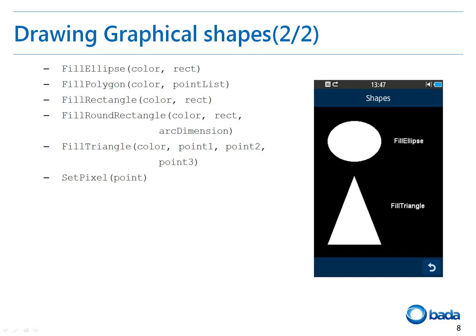Similar to drawing a shape, Bada provides a method to fill these shapes with a specific color. Bada provides a set of predefined colors and options to create user-defined colors, which we'll look at later in this tutorial. A filling function is supported for the ellipse, polygon, rectangle, round rectangle, and triangle shapes. In addition, you can draw a point at a specific coordinate on the screen by calling the setPixel function.